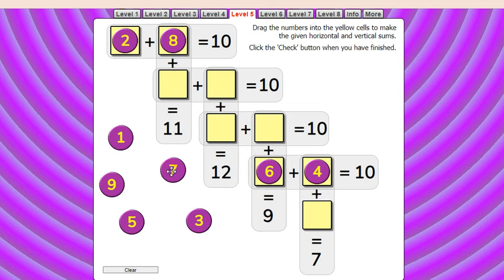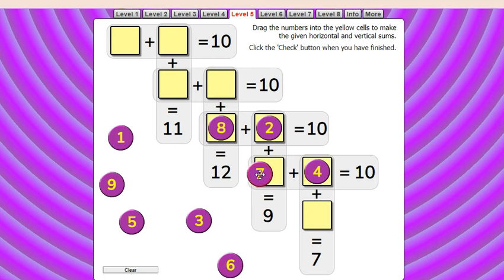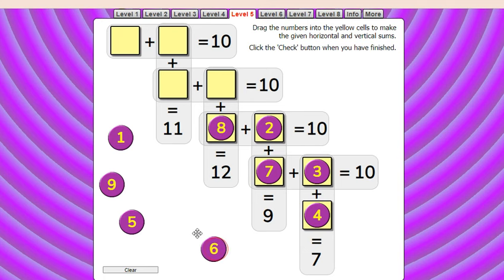So here I am placing eight plus two equals ten. Two plus seven equals nine. Seven plus three equals ten. Three plus four equals seven. Here we need four to make this twelve.